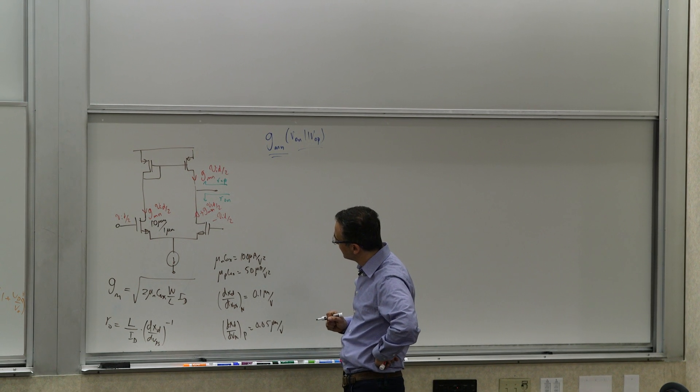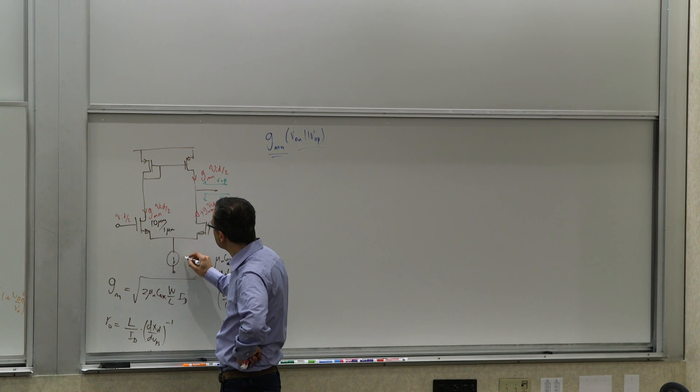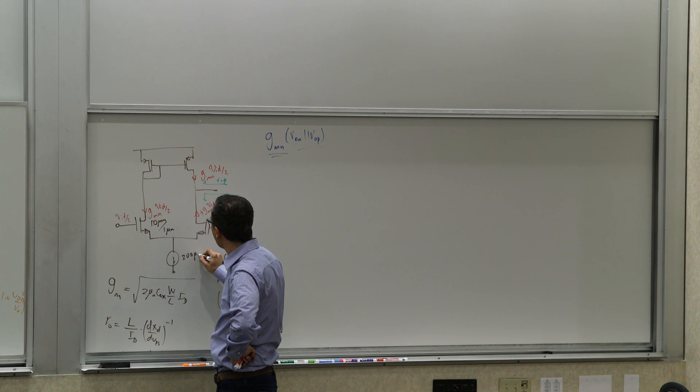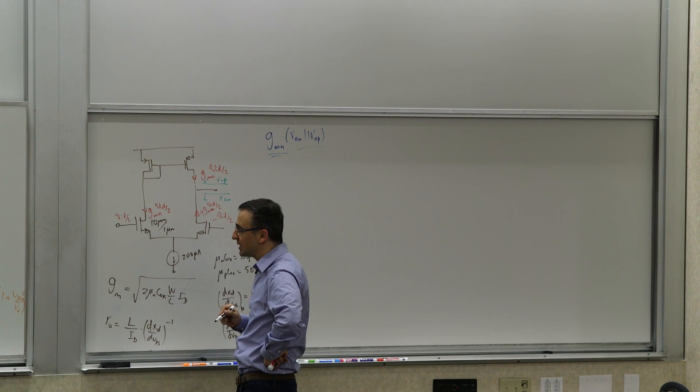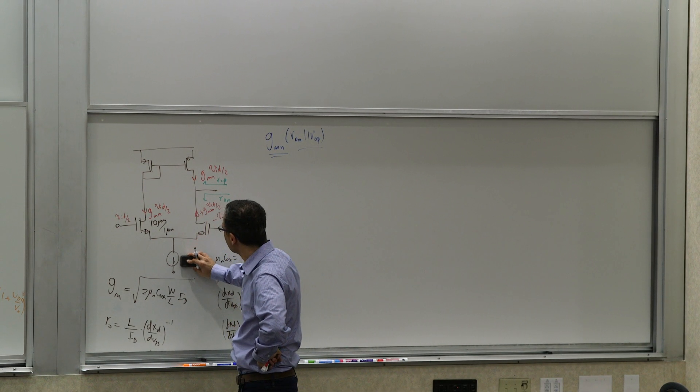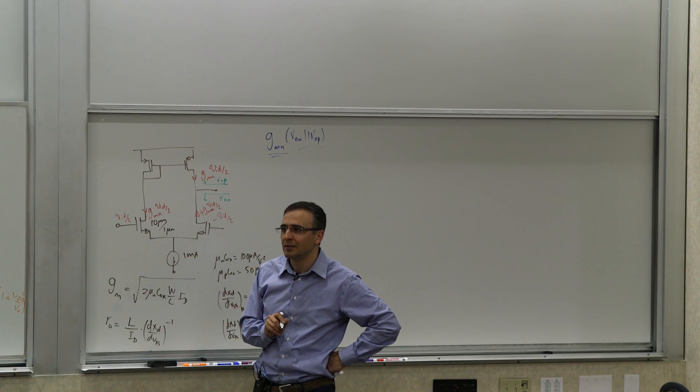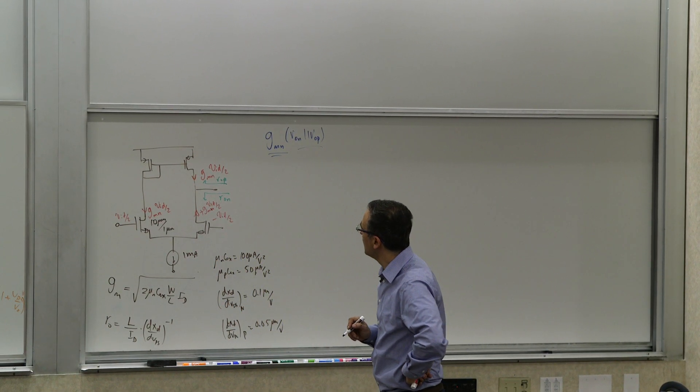So if you pick something like this, now, how about this guy? From a gain perspective, do I need my MOSFETs to be large or small? Just purely from the gain perspective. What determines my output resistance? Let's write the expressions.